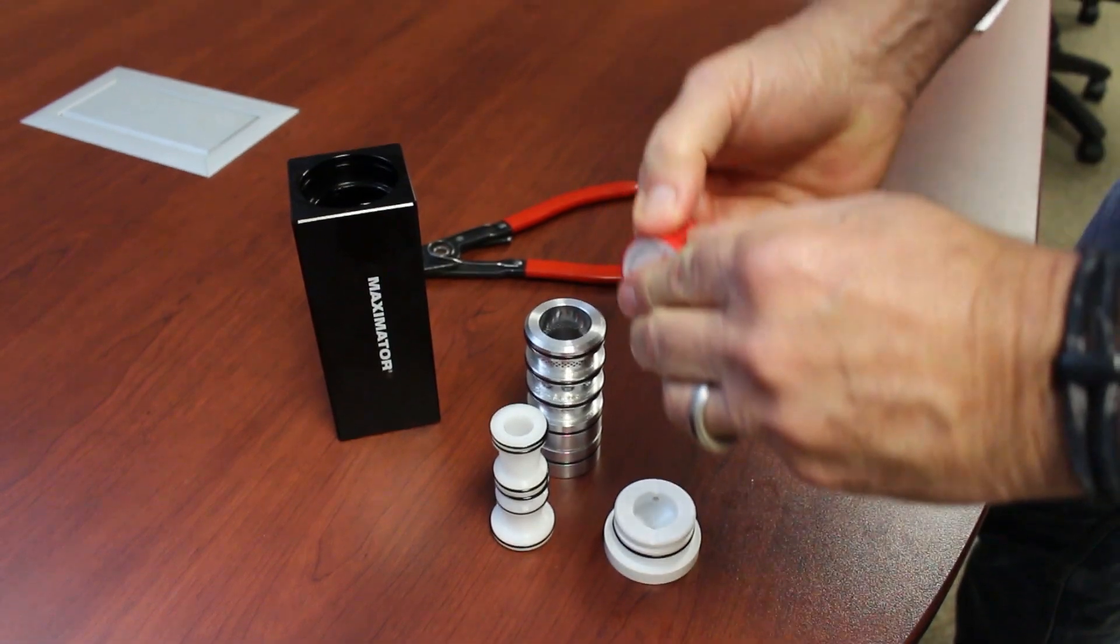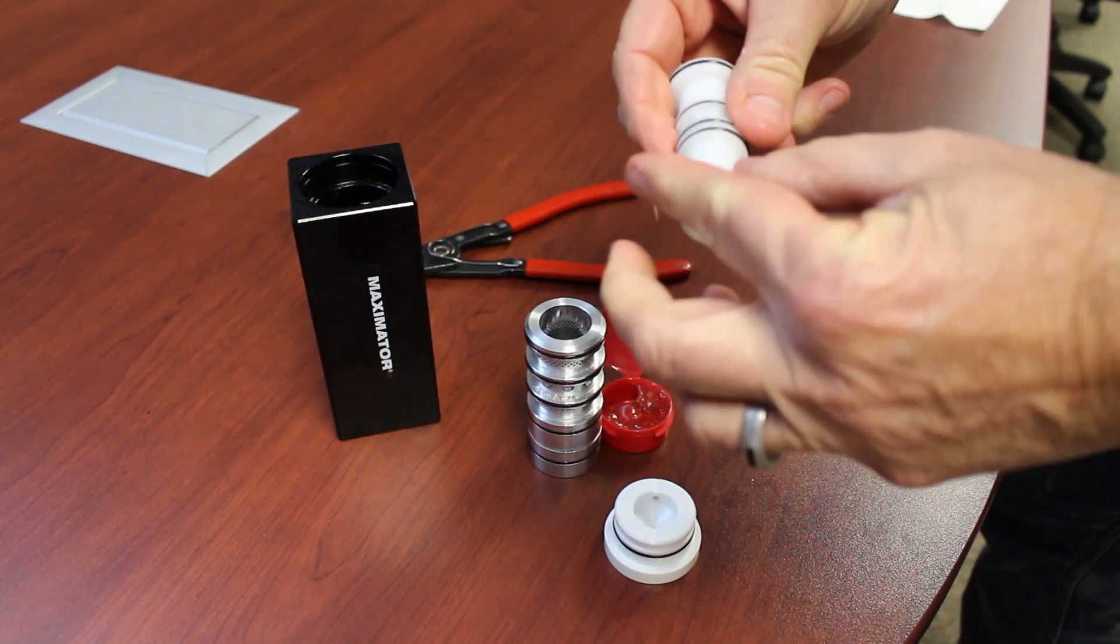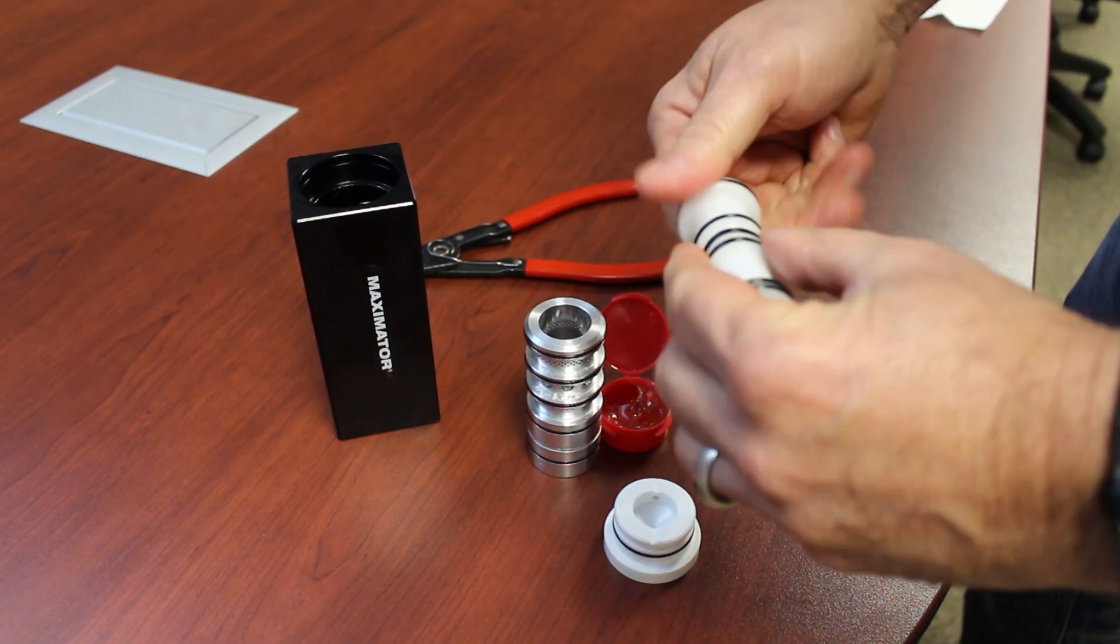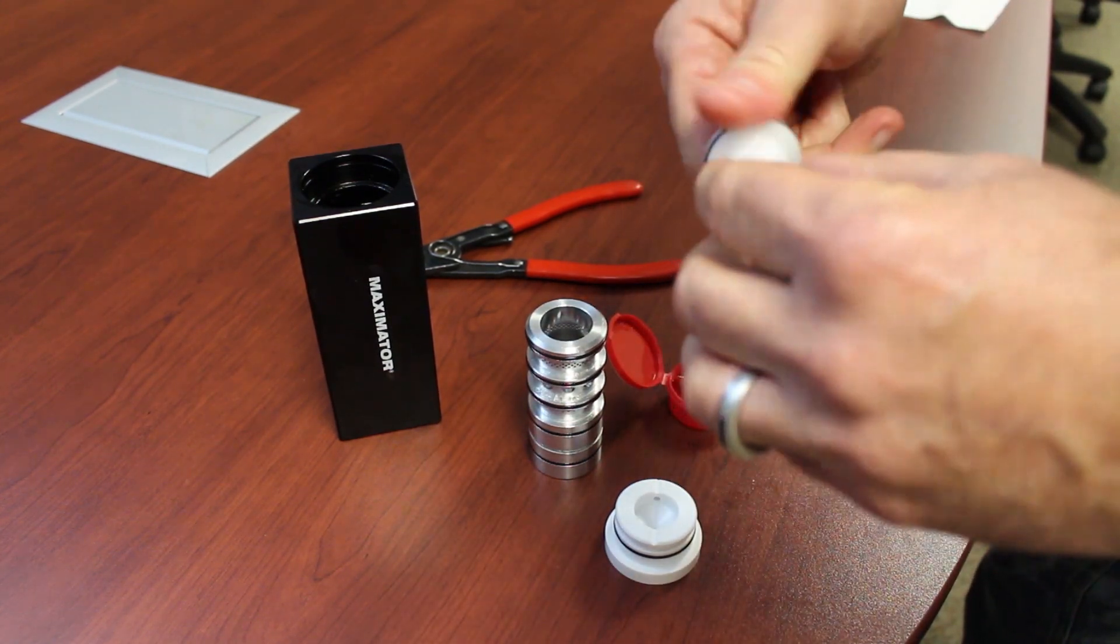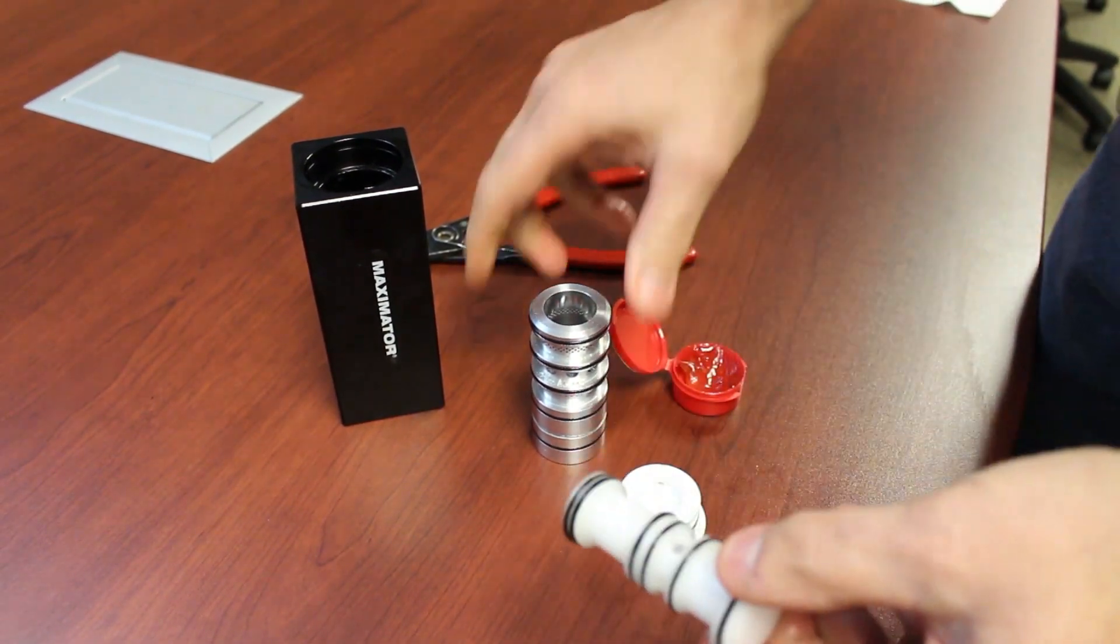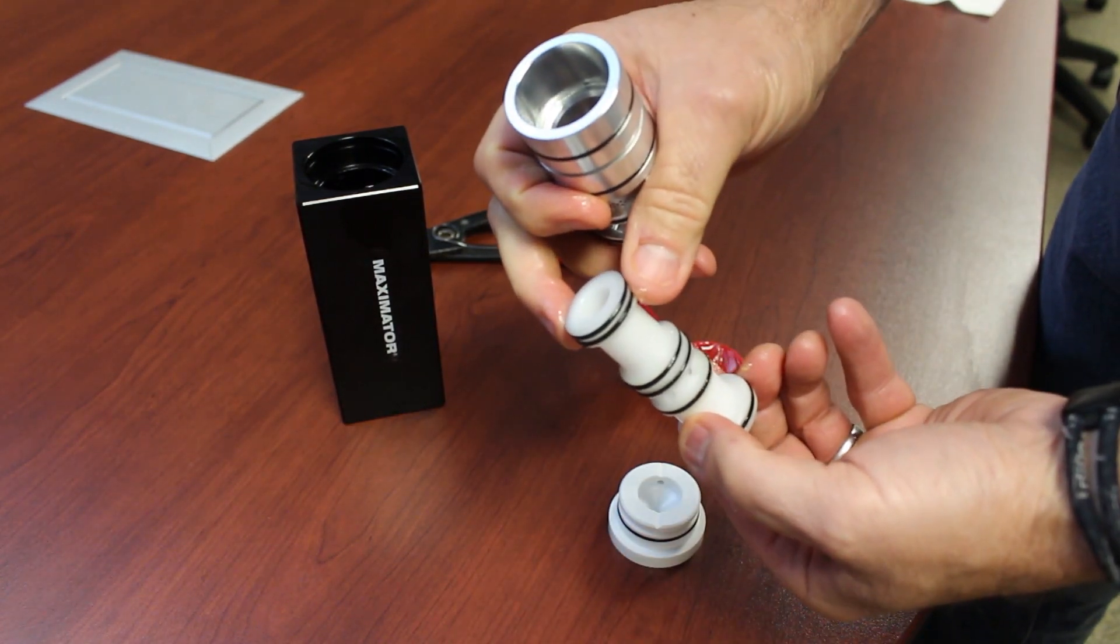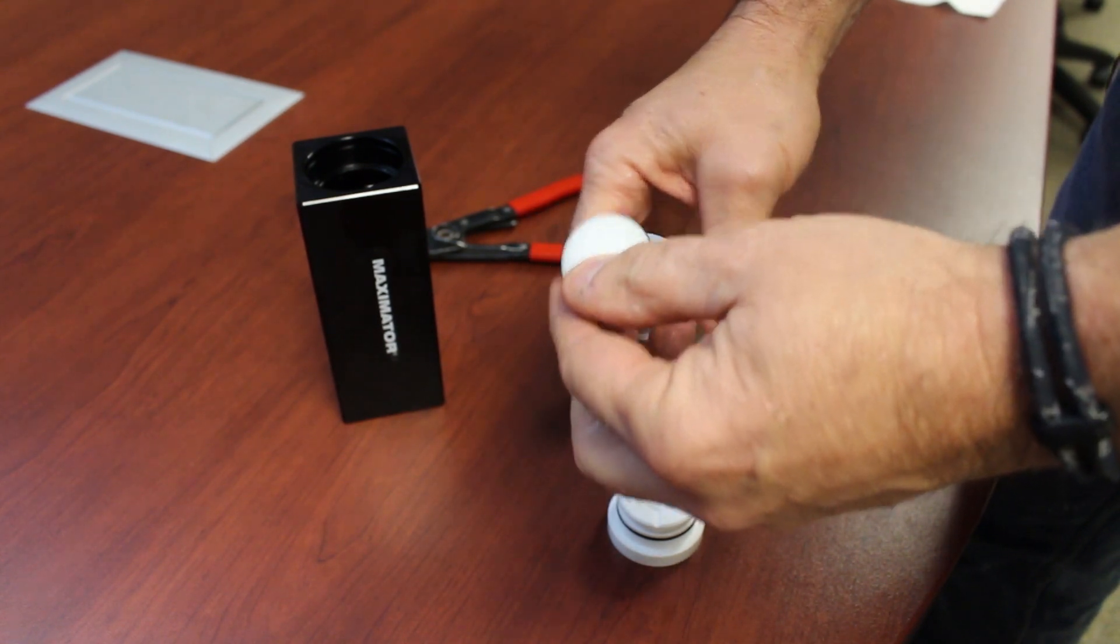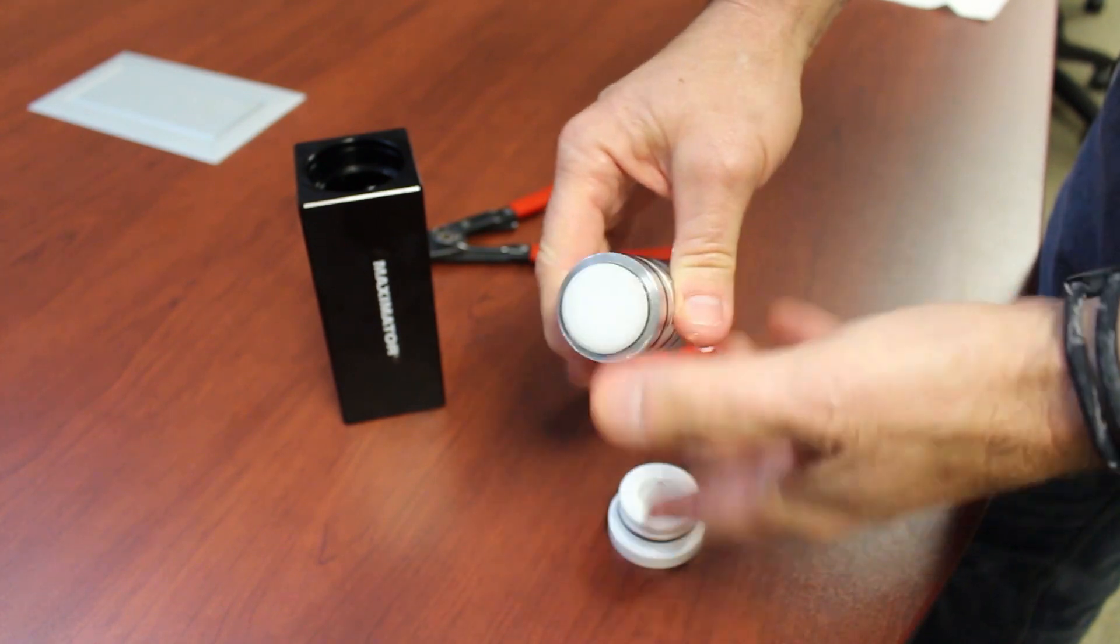Next thing you'll do is lubricate the O-rings on the spool with a small amount of grease. And then you can insert the spool into the sleeve. Since the O-rings are a little large, you don't want to force it in. You want to let it kind of find its way in, and it will drop down in very easily.